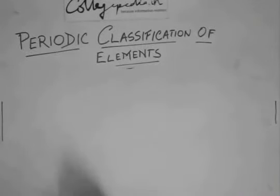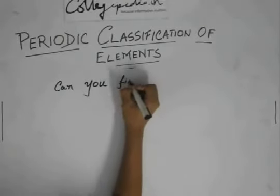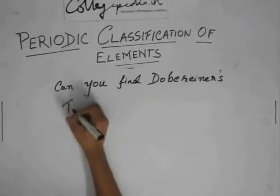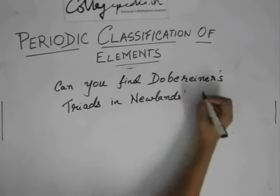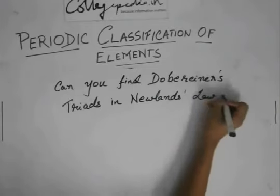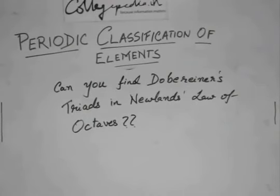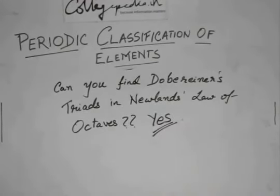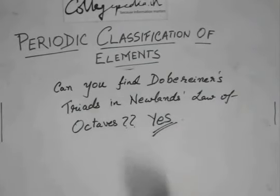There is one more important question, very interesting question. Can you find Dobereiner's triad in Newland's law of octaves? And the answer is yes. But just writing yes will not do in an examination, even if it is a one mark question. You have to answer why you can find Dobereiner's triad in Newland's law of octaves. You have to give an example.